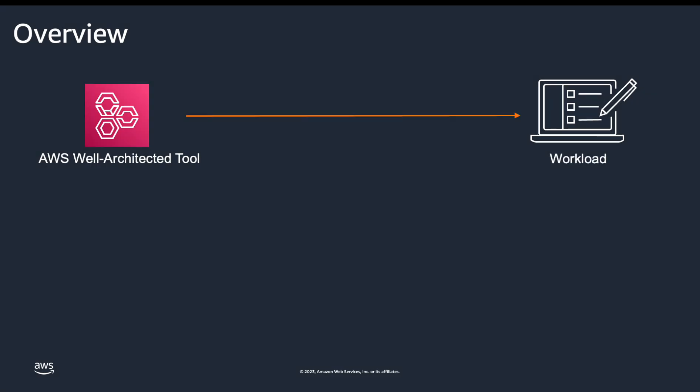The Well-Architected tool provides mechanisms to review the state of your applications and workloads against best practices, which helps you identify areas of strength and areas of improvement in your business. Until now, you had to manually select the common answers for questions that apply to multiple workloads, which has proven to be inefficient. With review templates, the newest feature of the AWS Well-Architected tool, you and your teams can start your Well-Architected reviews with a baseline review template, allowing you to make your reviews more efficient.